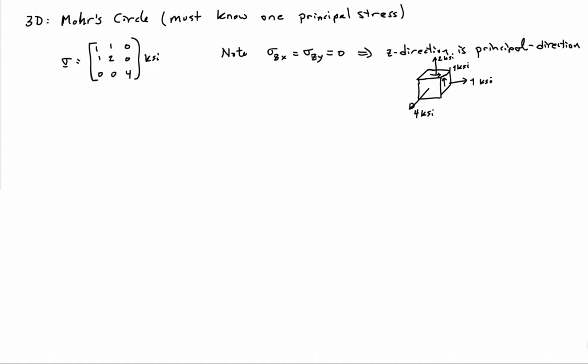If I go ahead and draw the picture for this state of stress, with the Z axis coming out at us, the X axis in this direction, the Y axis, and the Z axis here — you can see on this face there's no shear. So that's already a principal plane, or principal direction, of my system.